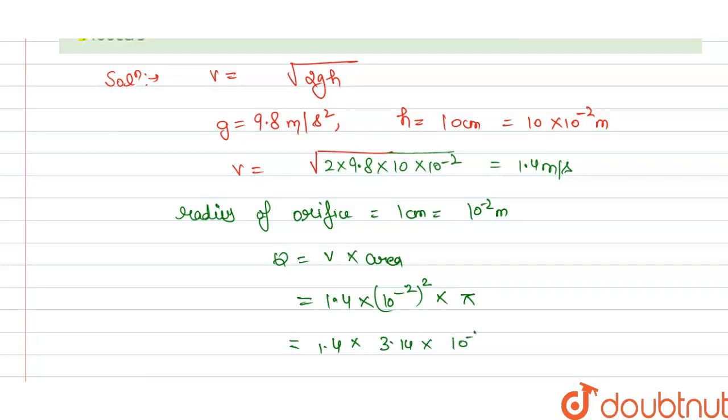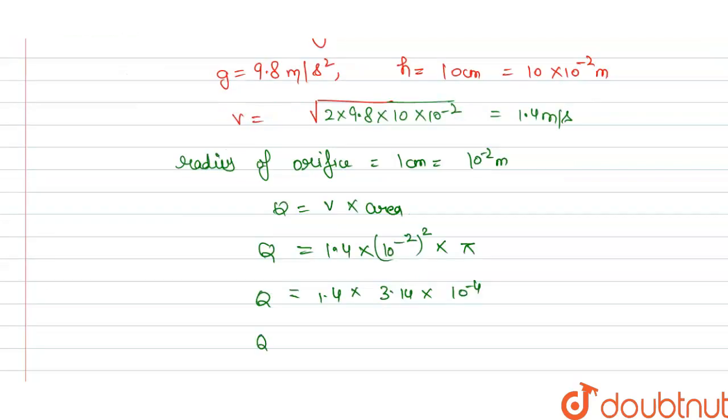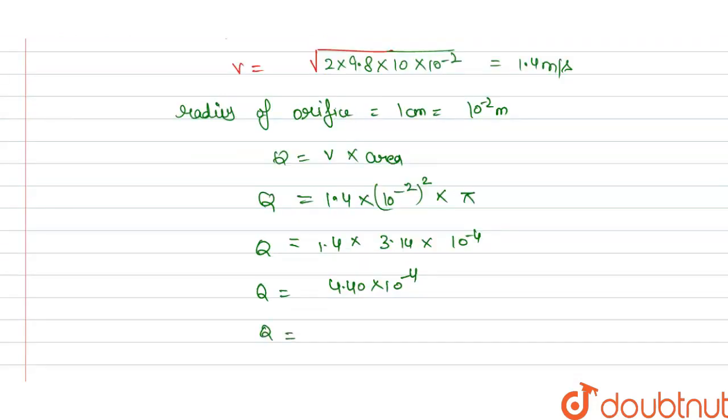So this is 10 power square and this is pi, so we can write this as 3.14 into 10 power minus 4. This is the rate of flow of liquid through the orifice, so we have Q equals 4.40 into 10 power minus 4.